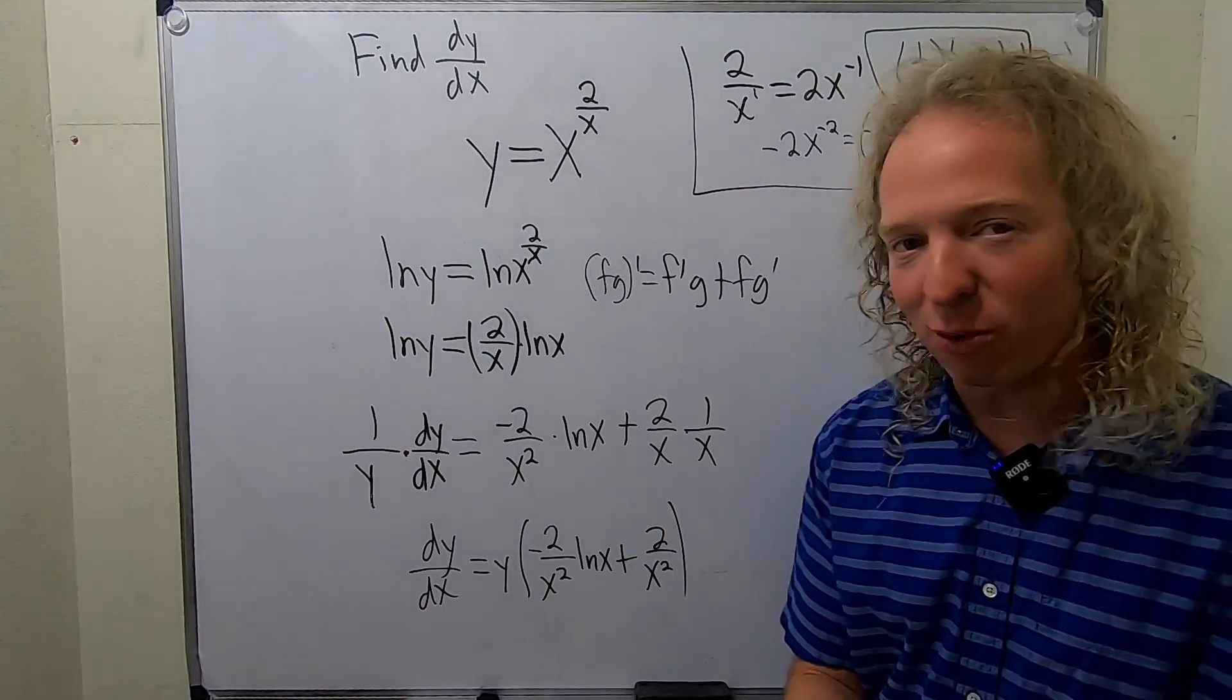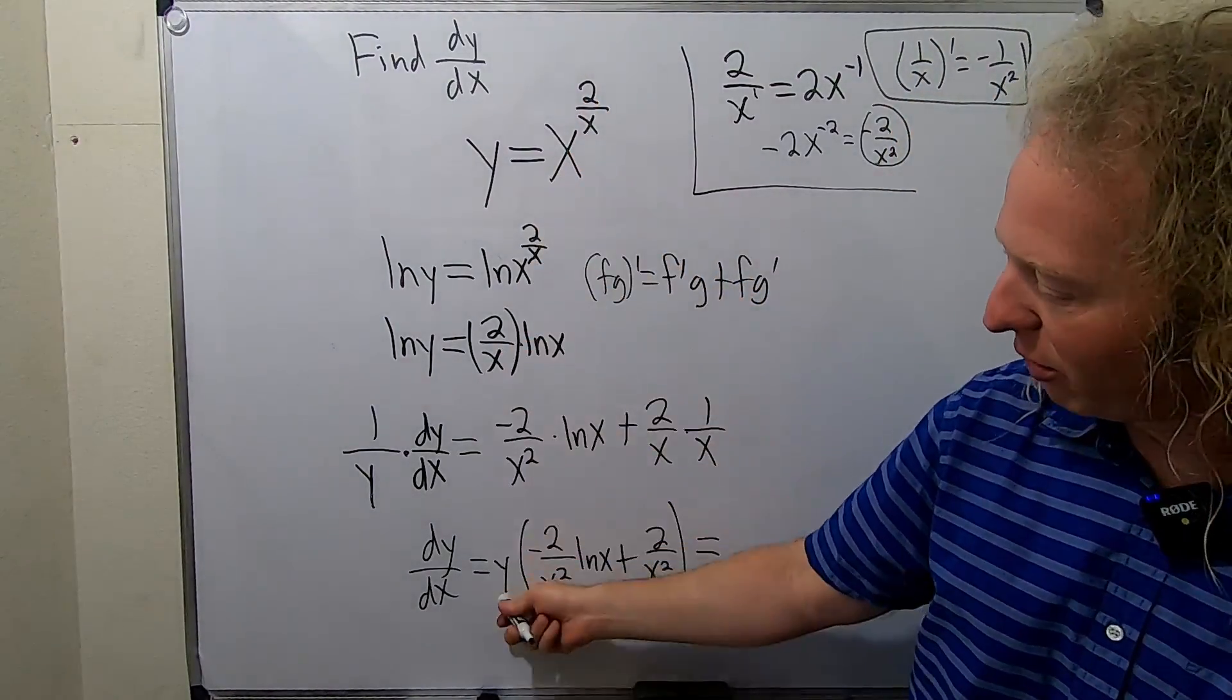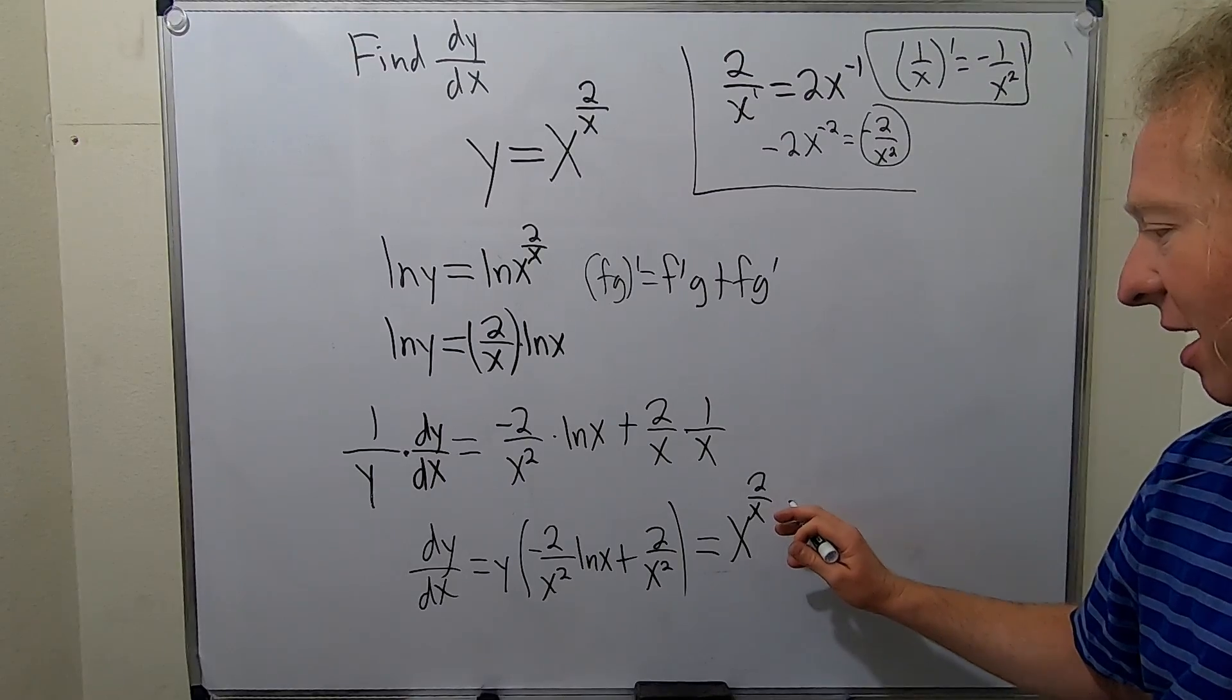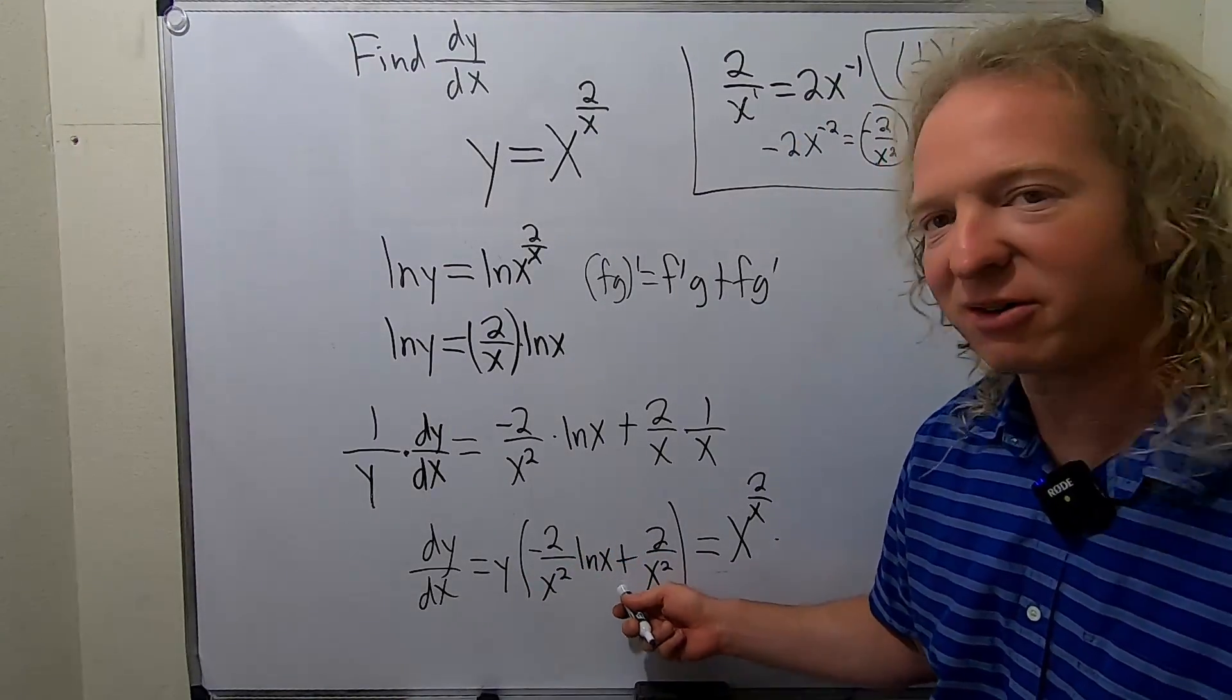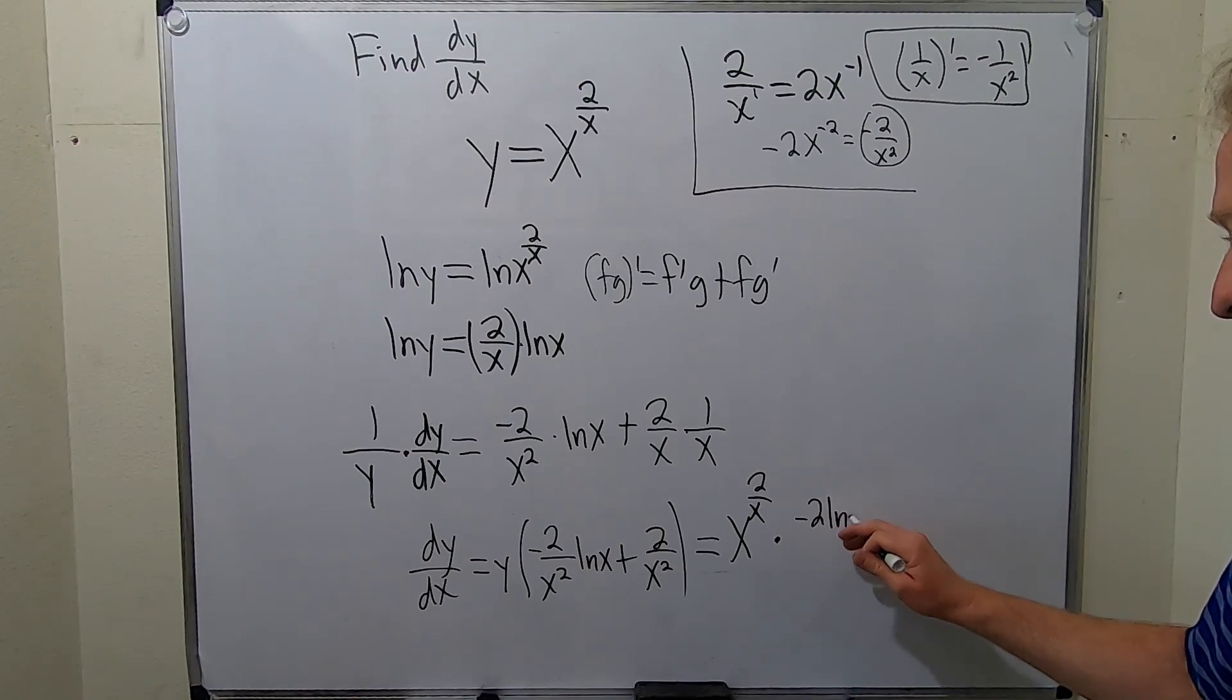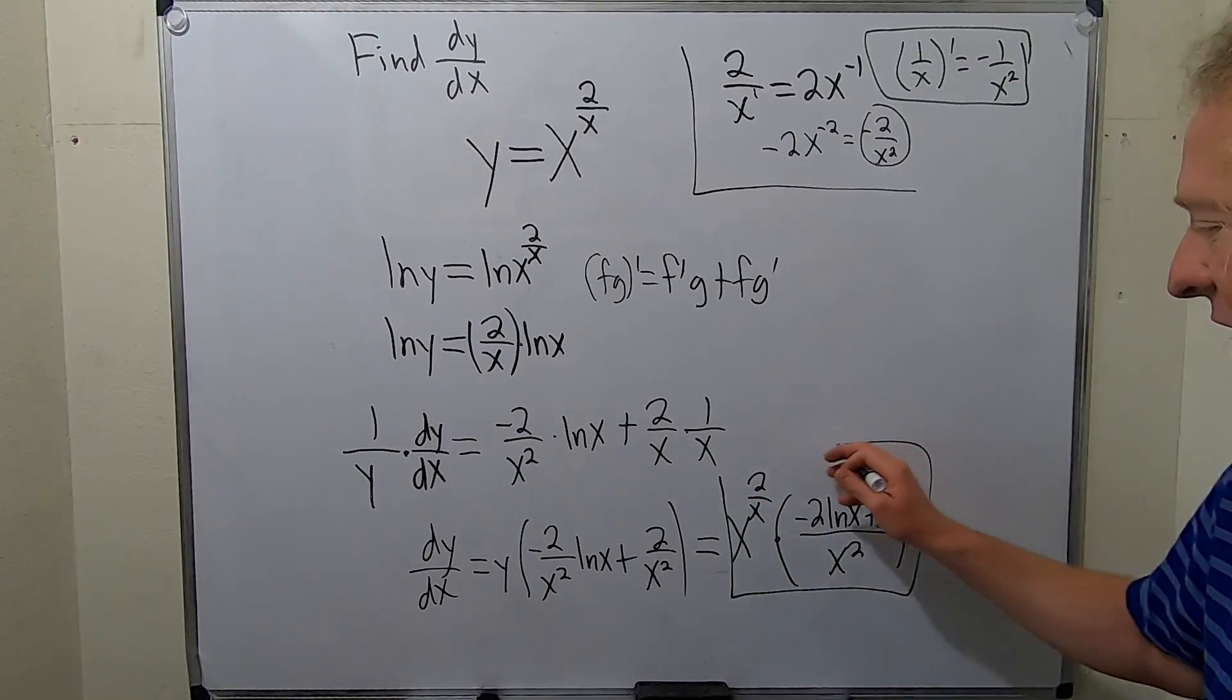Almost done. We're not done, because we know what y is. Y is this. So as a last step, just replace y with what it actually is. So this is x to the 2 over x, replacing the y. And I suppose we could combine these, because it's all over x squared. How convenient - I haven't done this problem, so it's kind of nice to see it worked out nice. So let's do that. Let's write it as negative 2 ln x plus 2 over x squared, and I'll put parentheses here for added clarity. And that would be the final answer.